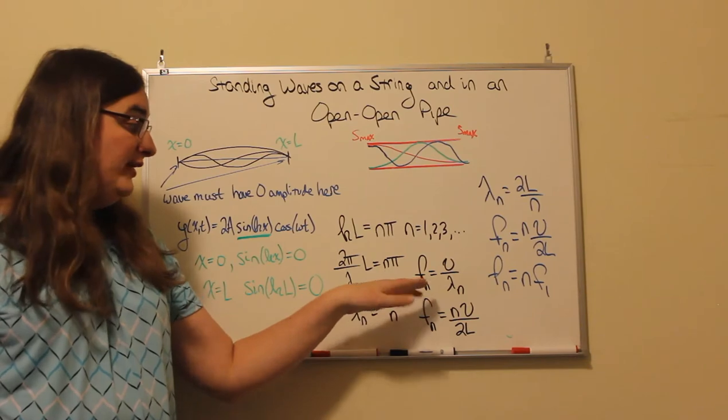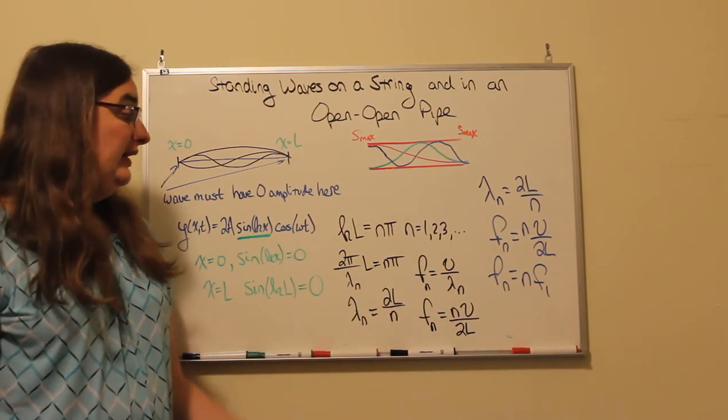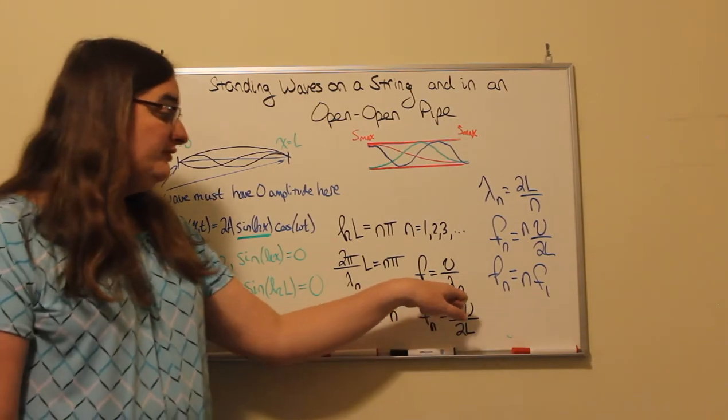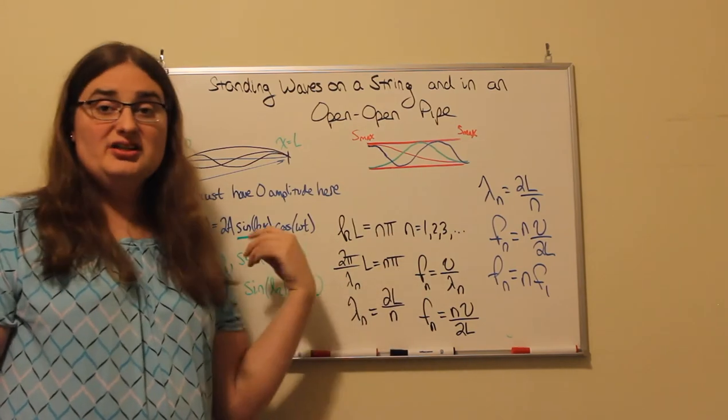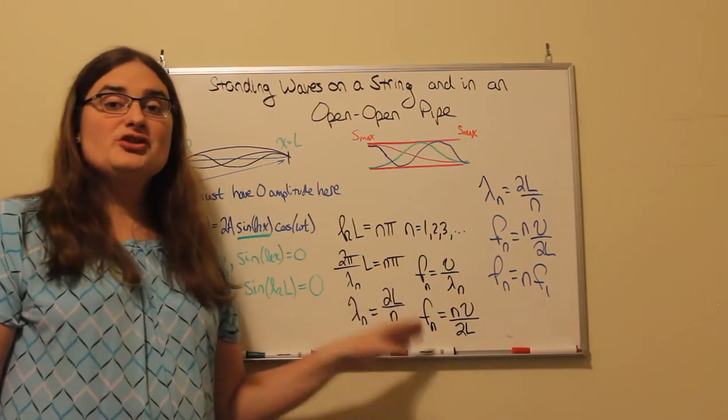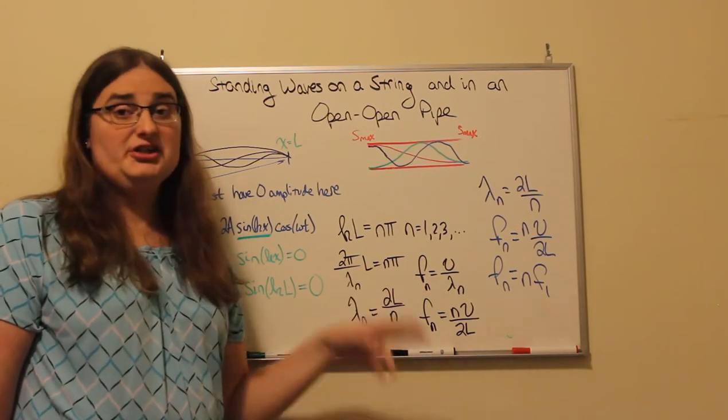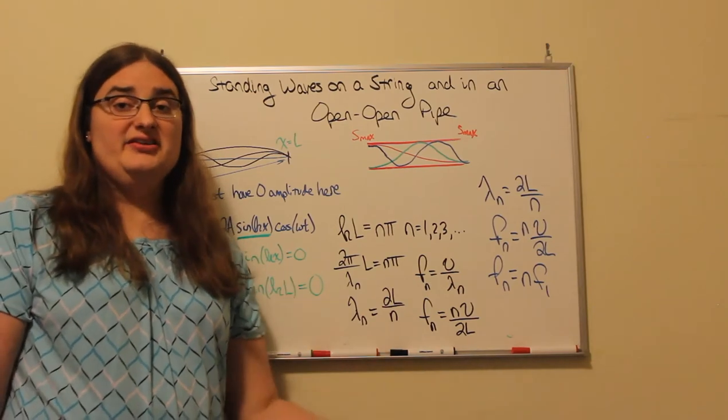Now for a wave, the frequency is the speed of the wave divided by the wavelength. The frequency is set by properties of the material. So if the wavelength has only discrete values, the frequency only has discrete values. So the allowed frequencies are going to equal an integer times the wave speed divided by two times the length of the string.